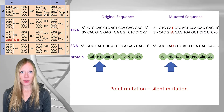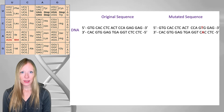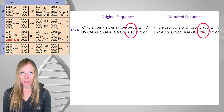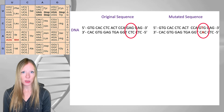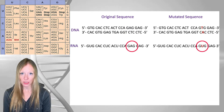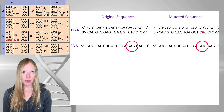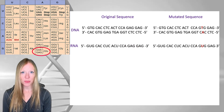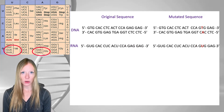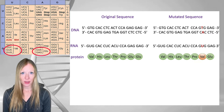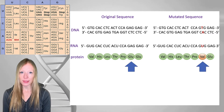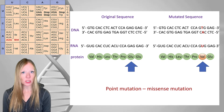Let's look at another mutation in the same sequence. This time there's a change in this codon from CTC to CAC, which means our messenger RNA will be GAG originally and GUG after the mutation. Looking at our codon table, GAG specifies glutamic acid, and our mutated codon GUG specifies valine. So we've changed one amino acid to a different amino acid, which makes this a missense mutation.